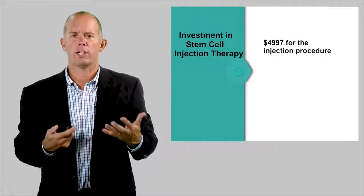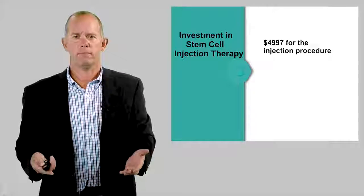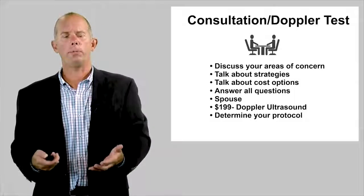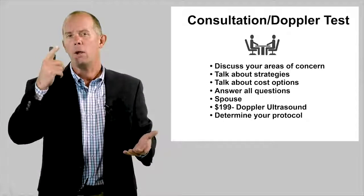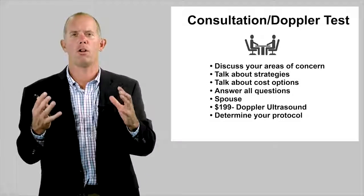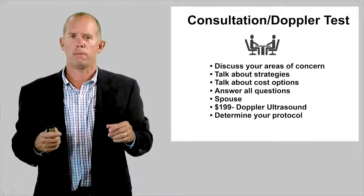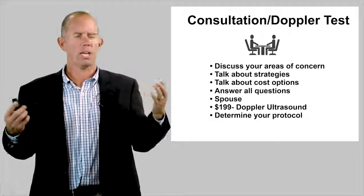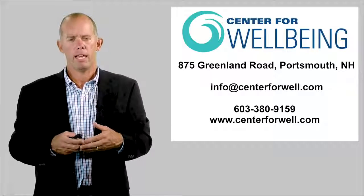So what is your investment in stem cell injection therapy? Well, it's $4,997 for the injection procedure. Again, I wish insurance covered this, but it doesn't. So again, what's next? We have to do a consultation. We have to do a Doppler test. We have to figure out which option is best for you. Is it pressure wave therapy? Is it stem cell injection therapy? Or our platinum program is a combination of both. And I will guarantee one thing, that's the future. If we can use the pressure wave therapy to break up microplaquing and to create neurogenesis, and we can do the stem cells to create angiogenesis and make new blood vessel flowing, that's the future.